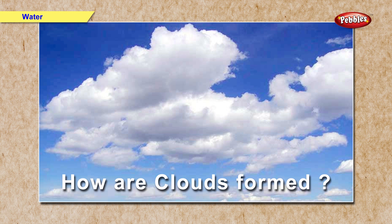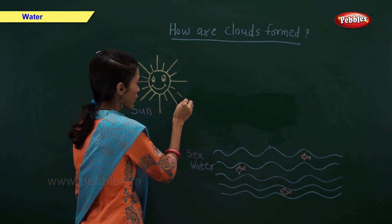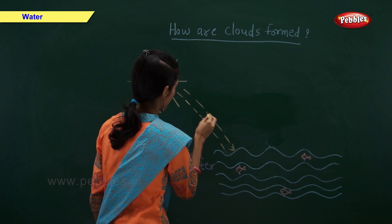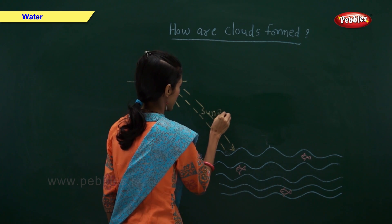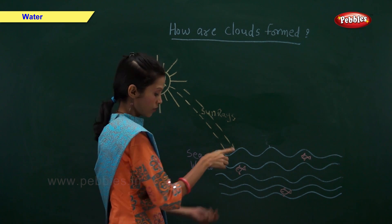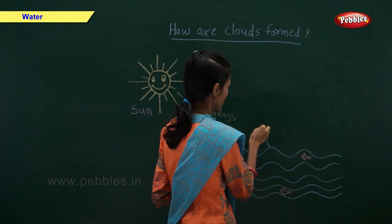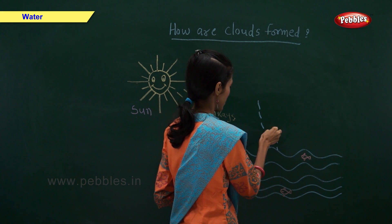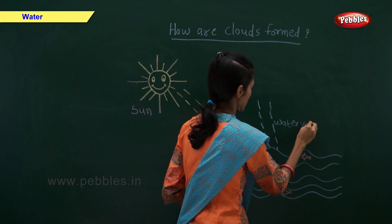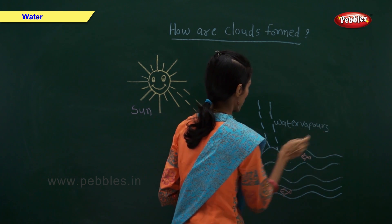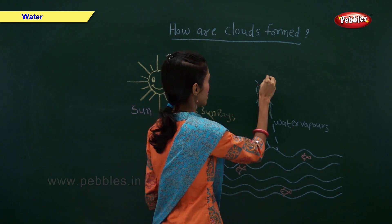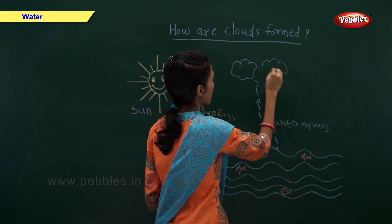How are clouds formed? Sun rays fall on the water. When sun rays fall on the water, water gets vaporized. Water vapors go up and form clouds.